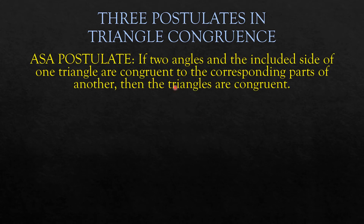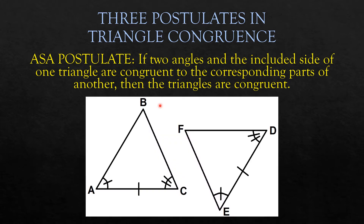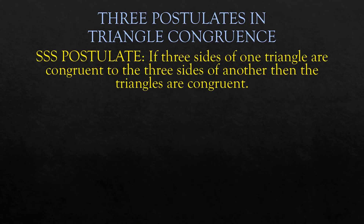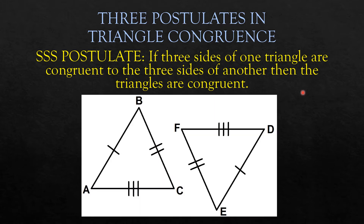The SSS postulate states that if three sides of one triangle are congruent to the three sides of another, then the triangles are congruent. In the illustration, you can see that the three sides of triangle ABC are congruent to its corresponding sides in triangle DEF.